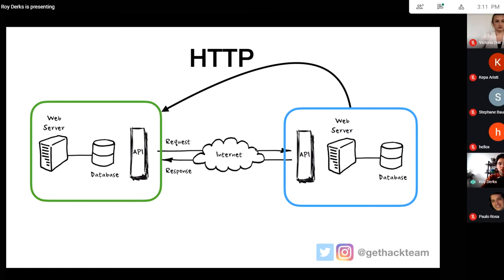Previously we saw an API that exposes a database or web server connecting with an application through HTTP — the same goes for a different API. The main thing to know is that they also use HTTP to communicate with each other, unless they're all in the same system. HTTP is really the main protocol to communicate with APIs.